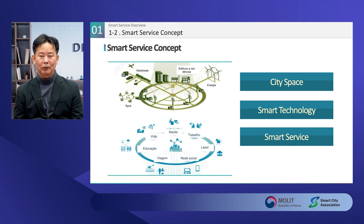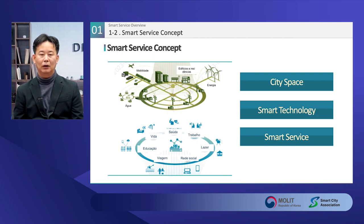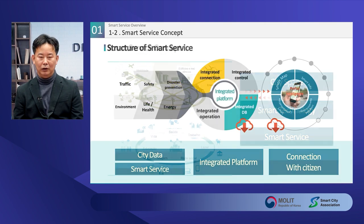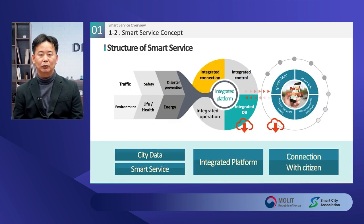Sixth, digital twin technology that creates and simulates a realistic environment in cyberspace. Then, who is providing smart services? Various subjects such as the government, private companies, or general citizens provide smart services. The government provides public smart services such as issuing civil affairs documents and water supply and sewage services. Since shared bicycles and shared parking are business models, they are mostly provided by private companies. Talented ordinary citizens use government data to create bus arrival information with smartphone apps and provide them for free.